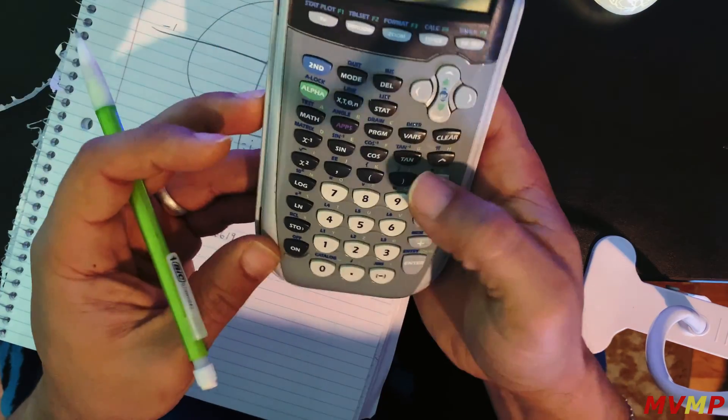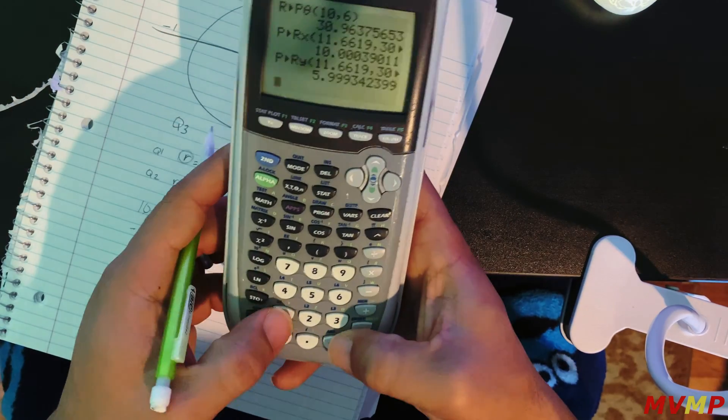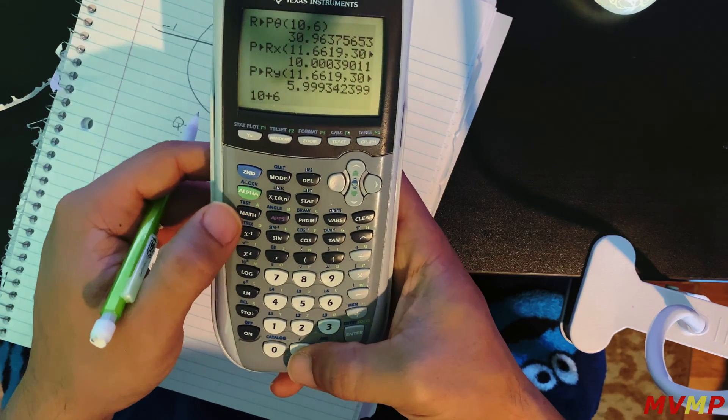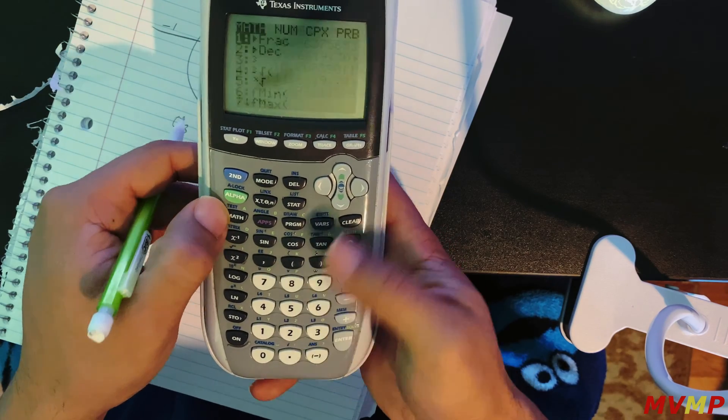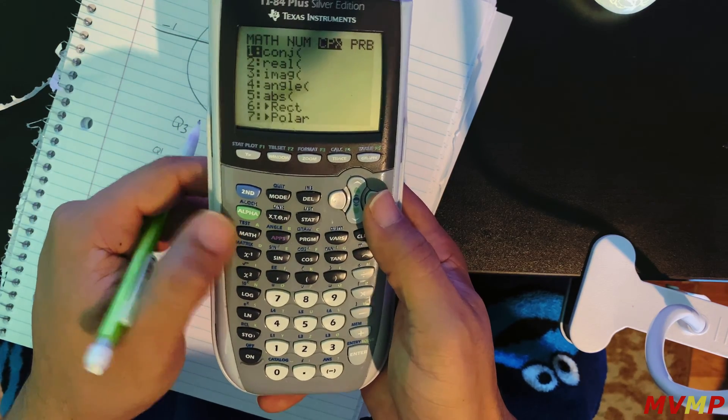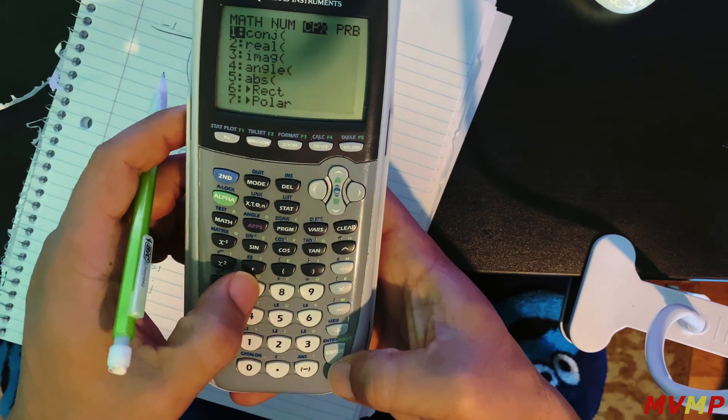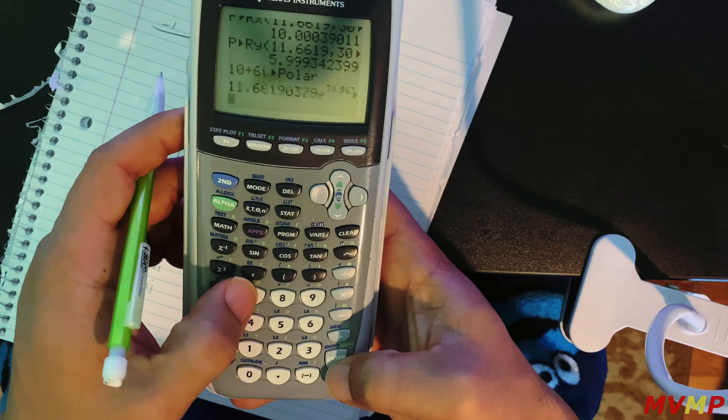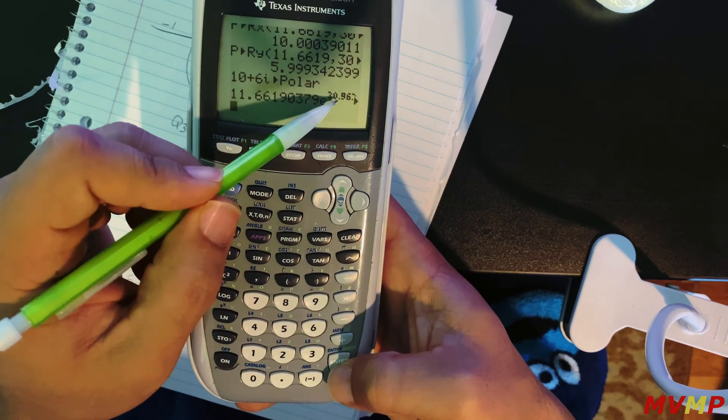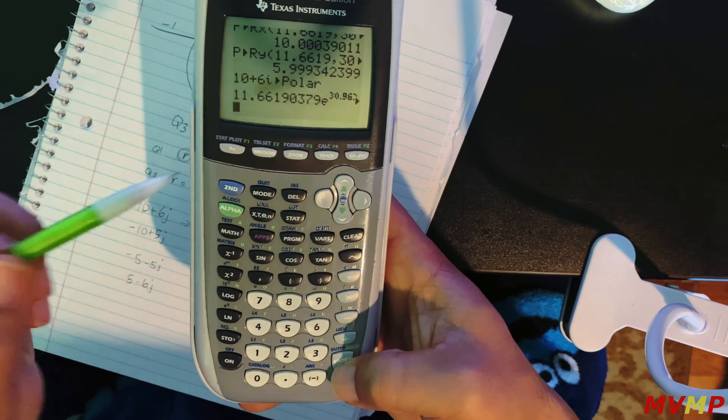Now there is another way to do this. You can type out the expression, then go to math, scroll over to complex. Since we are already in rectangular we want polar. There you go. As you can see we get the same answer.